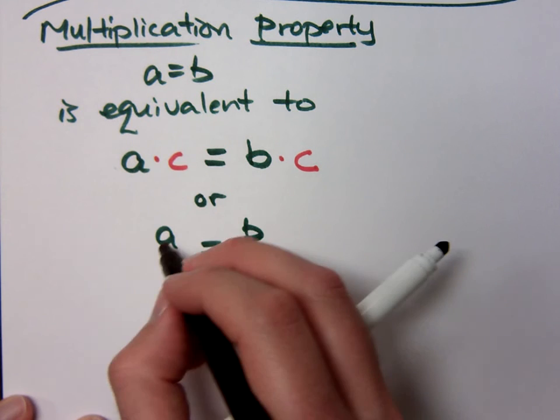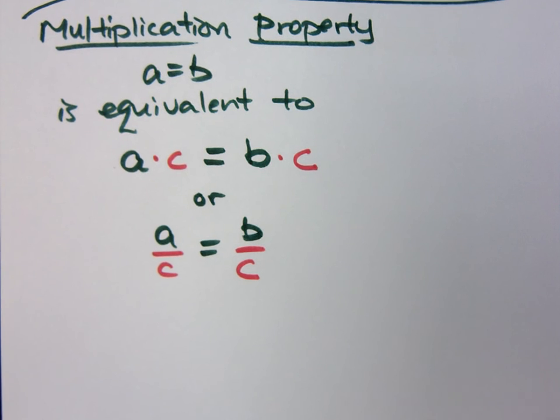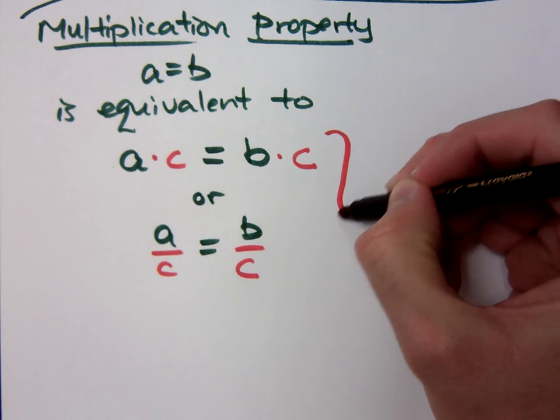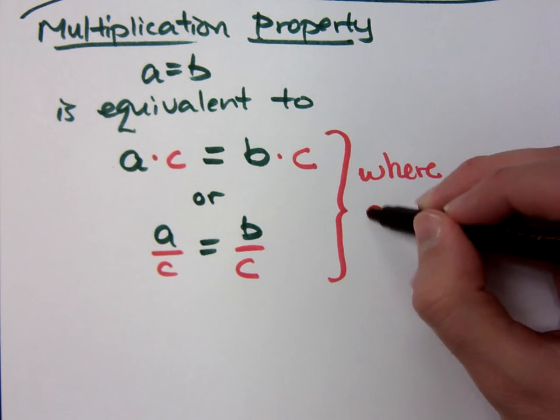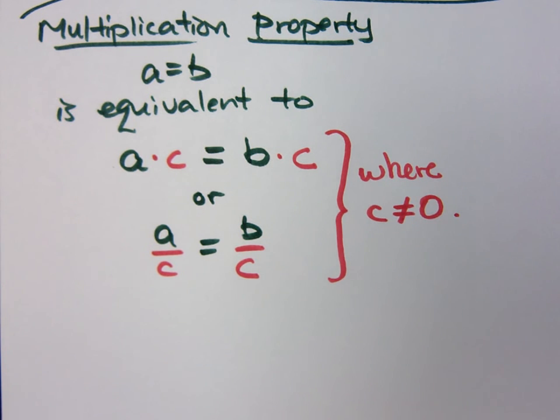Or, instead of multiplying both sides times the number, you can divide both sides by the same number. It just depends on what you're trying to do to get your variable by itself. One of the things we need to note here, though, is that C does not equal 0. You are not allowed to multiply or divide both sides by 0. It's not very helpful.